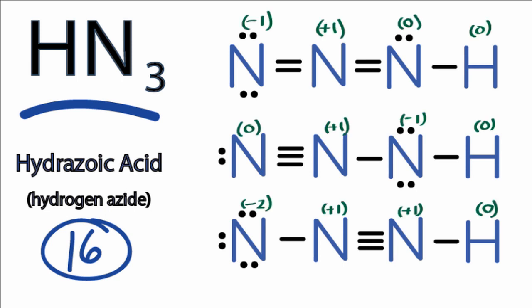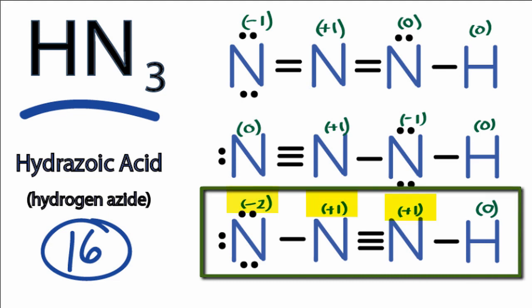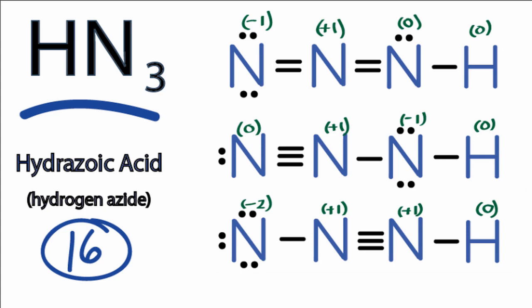When we calculate the formal charges we want our formal charges to be as close to zero as possible. So when we look at the last Lewis structure here with that negative two and those two positive ones, that's probably not the best Lewis structure for HN3.